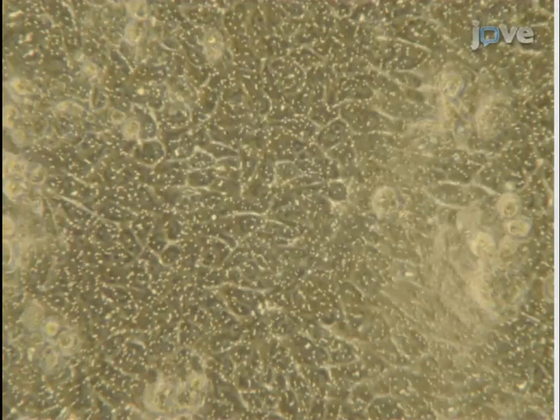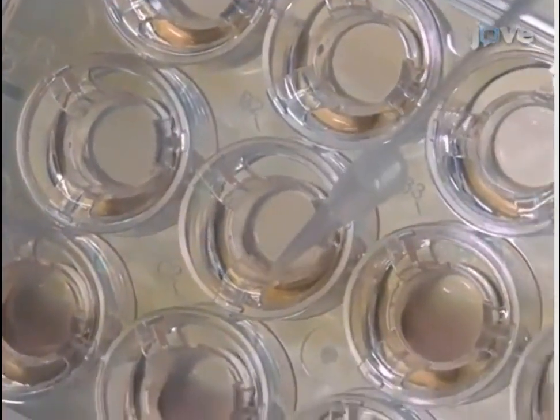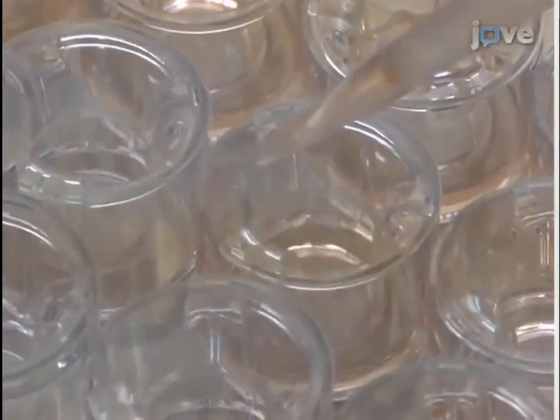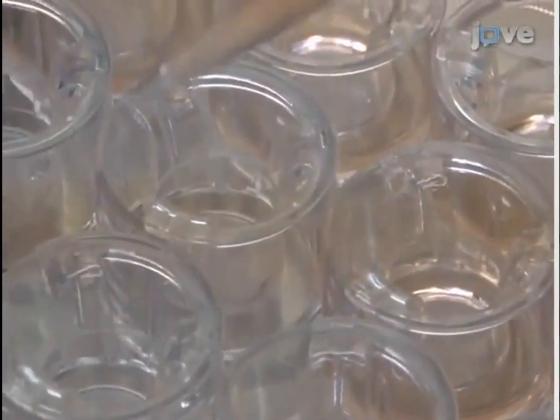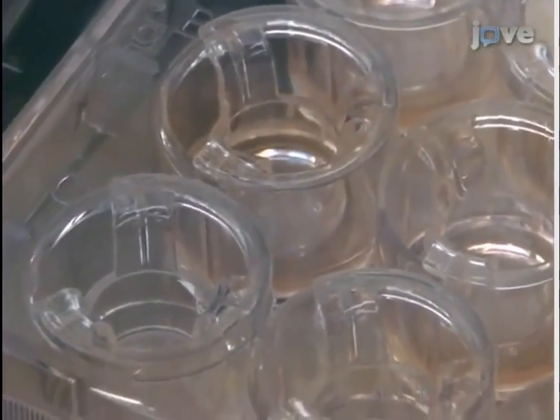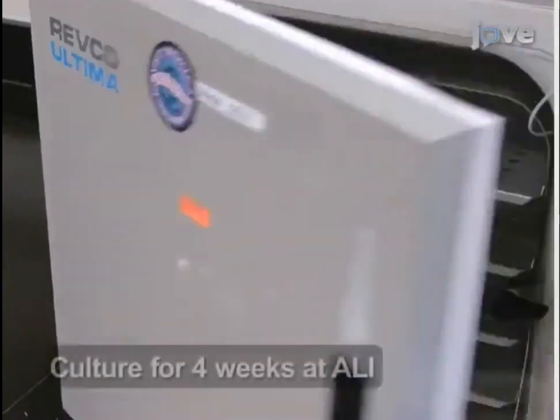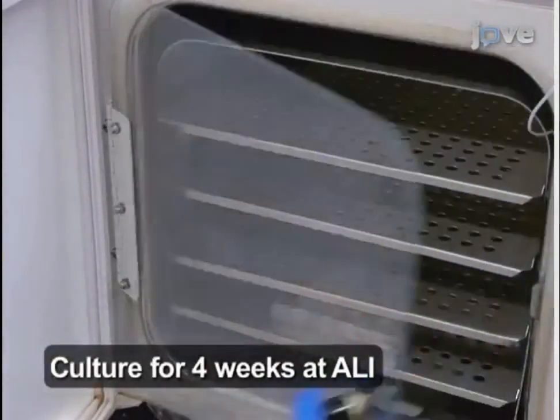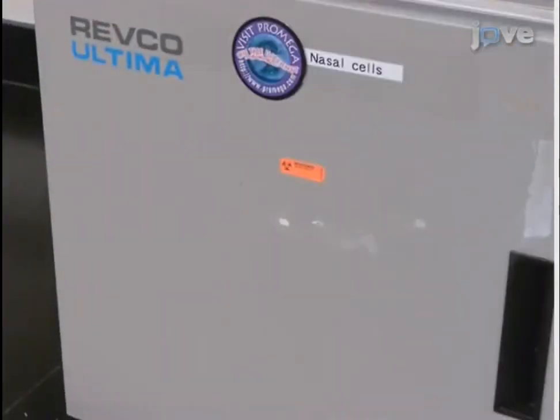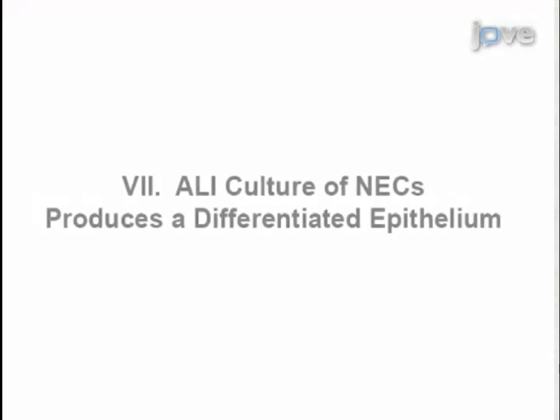To establish air-liquid interface or ALI, 48 hours after the induction with retinoic acid, remove all media and add 700 microliters PneumoCult ALI maintenance media to the basolateral side only. There is no medium on the apical side. Maintain the cell cultures for four weeks at the ALI. Please refer to the accompanying protocol text for further details of the procedure for establishing and maintaining ALI.